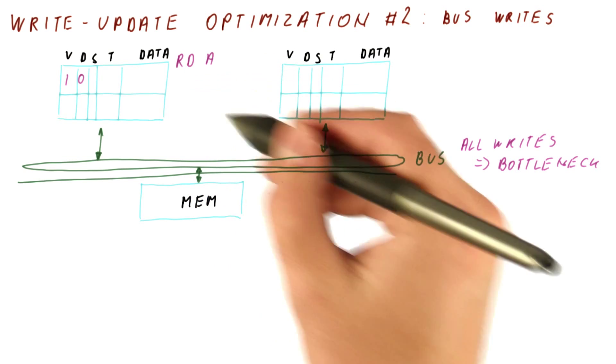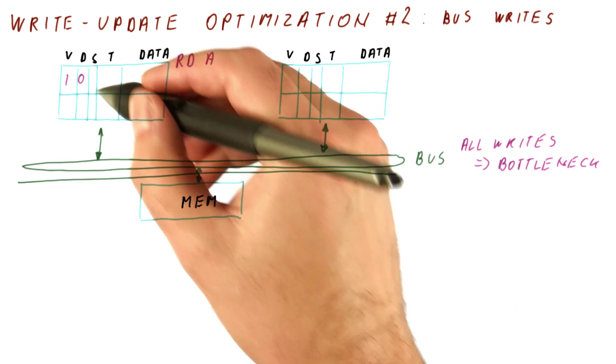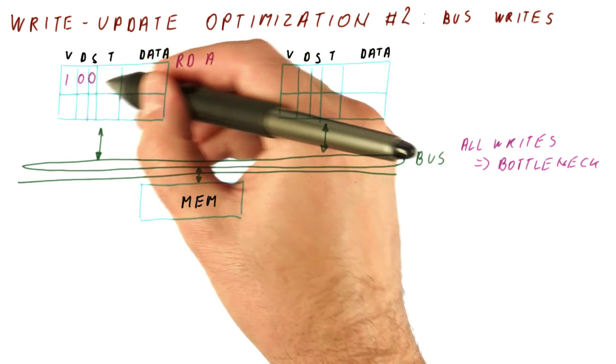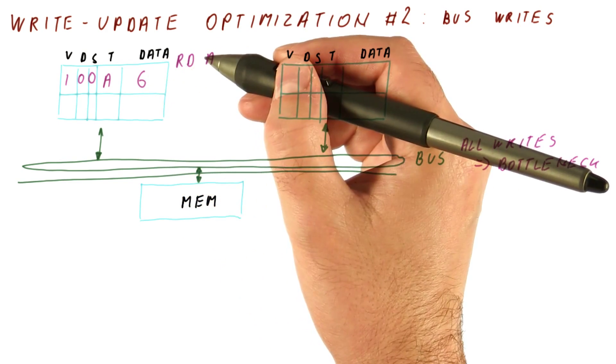because this is the first read, nobody pulls the shared line to 1, so the block we know is not shared. This is the tag, and let's say we read 6.